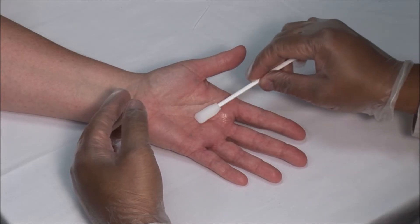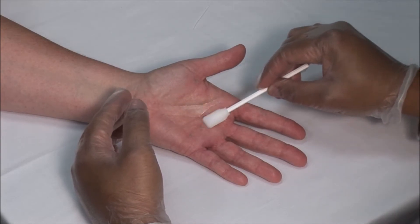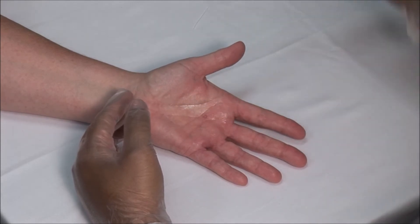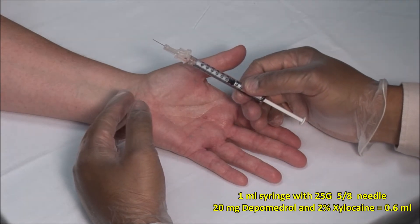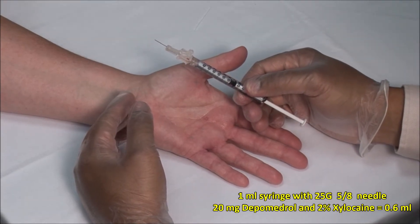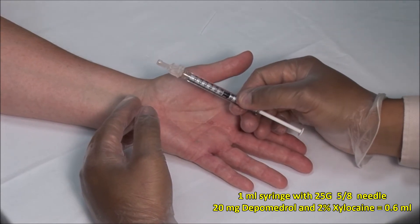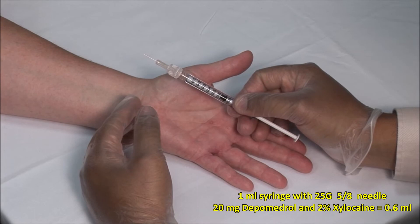I am using a mixture of 2% chlorhexidine and 70% isopropyl alcohol. Here I have a 1 ml syringe with a 25 gauge 5/8 inch needle and a mixture of 20 mg of depomedrol and 2% xylocaine made up to a volume of 0.6 mls.